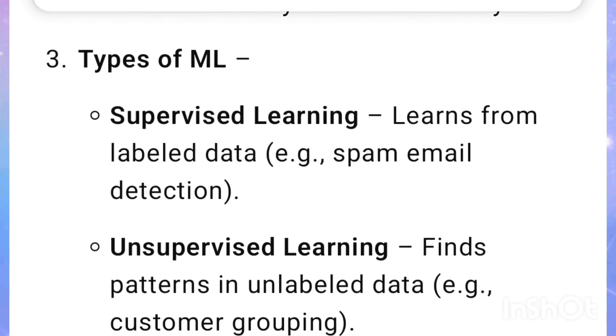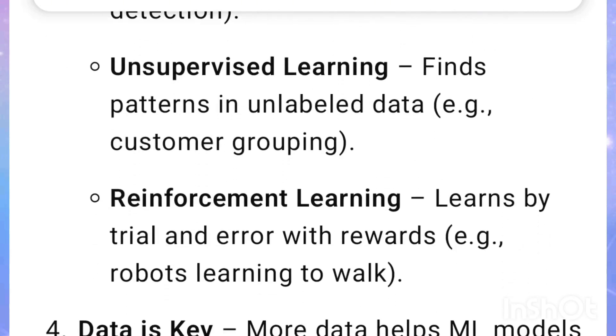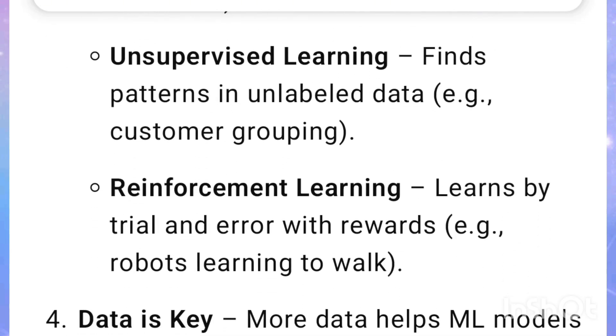Types of ML: Supervised learning learns from labeled data, for example spam email detection. Unsupervised learning finds patterns in unlabeled data, for example customer grouping.